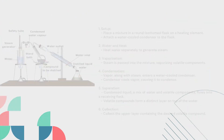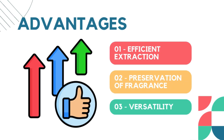Now we are moving towards the advantages and disadvantages of steam distillation. The first advantage is efficient extraction — steam distillation is effective for extracting volatile compounds without exposing them to high temperatures, leading to an efficient extraction process. The second advantage is preservation of fragrance — the lower temperature helps retain delicate flavors and aromas, preventing them from deteriorating. The third advantage is versatility — steam distillation is suitable for extracting essential oils from a variety of plant materials.